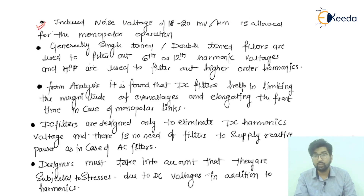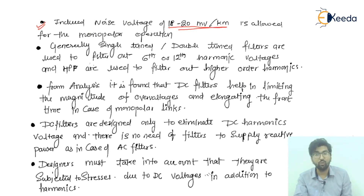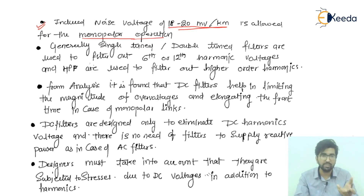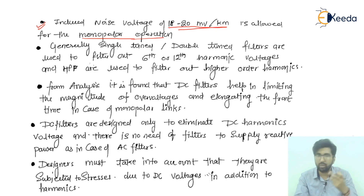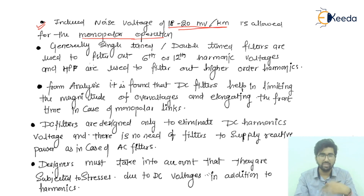An induced noise voltage of 18 to 20 millivolts per kilometer is allowed for monopolar operation. For a monopolar DC link, the permissible INV value ranges from 18 to 20 millivolts per kilometer.